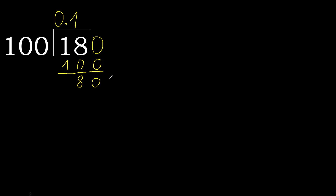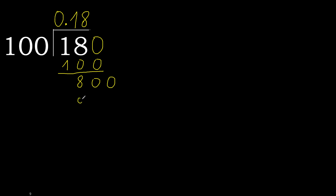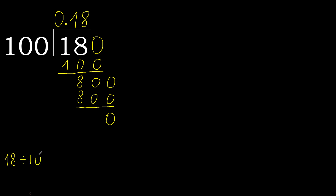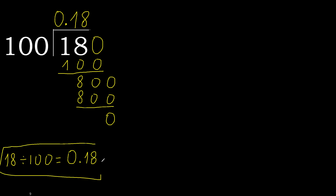That is no number, therefore always complete with 0. Here: with 0 point — 800. 100 multiplied by 8 is 800 — is not greater. Ok. Subtract 0. 0, therefore finish. 18 divided by 100 is 0.18.